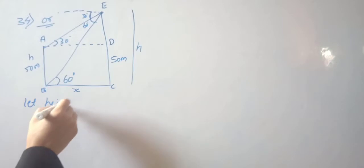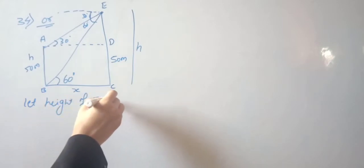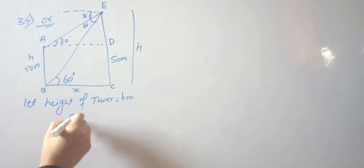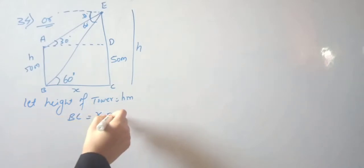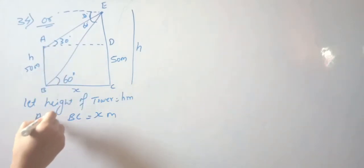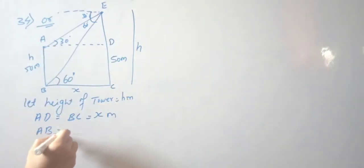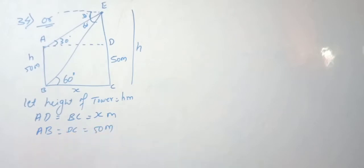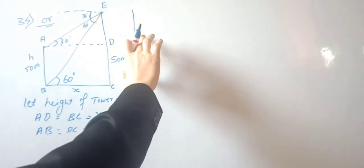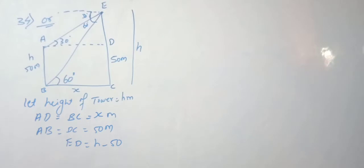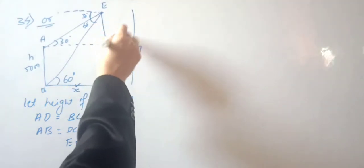We need to find the height of the tower and the distance between the building and the tower. Let the height of the tower be h meters. The distance between building and tower (BC) is x meters. Since BC equals AD, we have AD = x as well. Now, ED is equal to h minus 50, because the total tower height is h and CD is 50 meters.